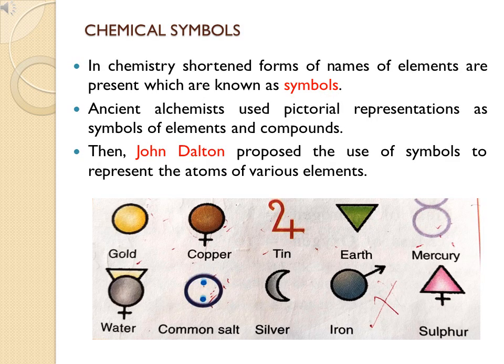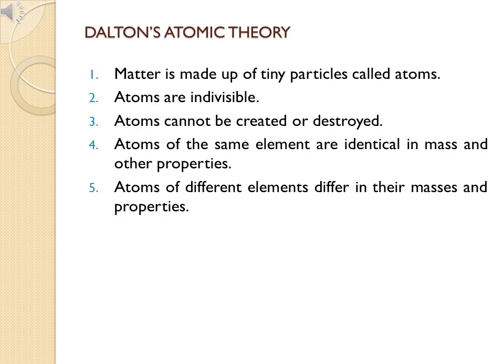In chemistry, shortened forms of element names are called symbols. Some element names are quite long, making them time-consuming and space-consuming to write. The use of symbols started with ancient alchemists, who used pictures to represent elements and compounds. Then John Dalton proposed the use of symbols to represent atoms of various elements, arguing that pictorial representations were confusing to remember.